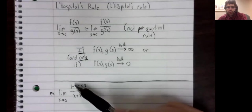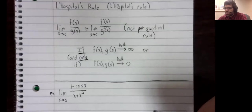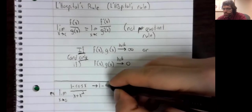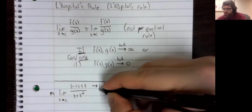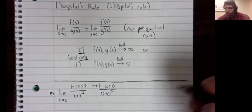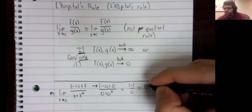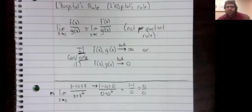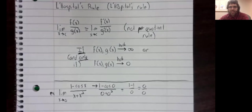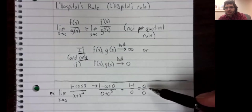As x goes to zero, this is continuous, and this is continuous. So the numerator is going to one minus the cosine of zero. The denominator is going to zero plus zero squared. This is an indeterminate form.